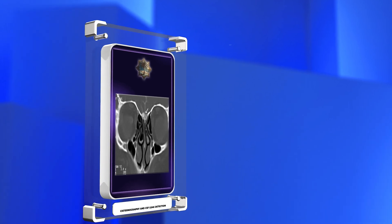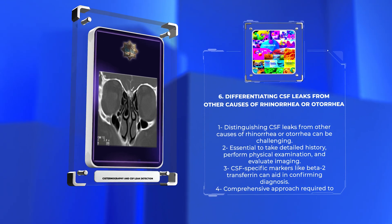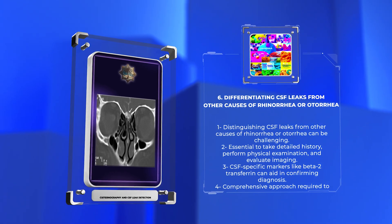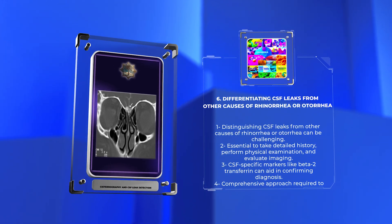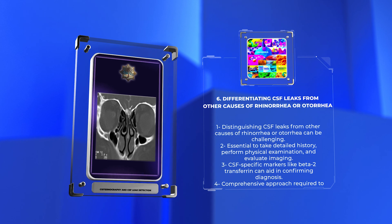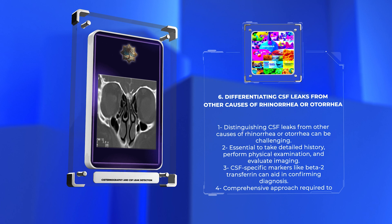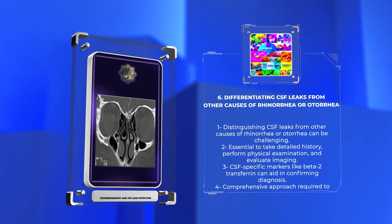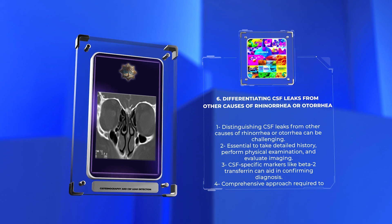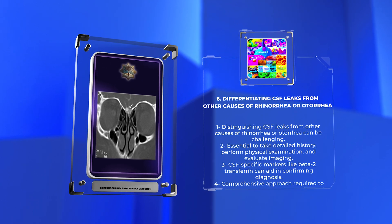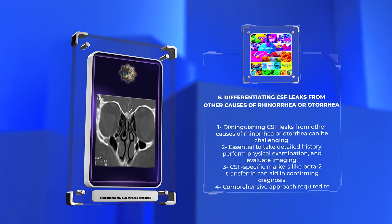Distinguishing CSF leaks from other causes of rhinorrhea or otorrhea can be challenging. Detailed history taking, physical examination, and imaging evaluation are essential. CSF-specific markers, such as beta-2 transferrin, can aid in confirming the diagnosis. Differentiation from conditions like allergic rhinitis, sinusitis, or traumatic injuries requires a comprehensive approach. The camera focuses on a comparison table highlighting the distinguishing features between CSF leaks and other causes of rhinorrhea or otorrhea.